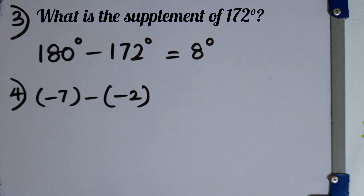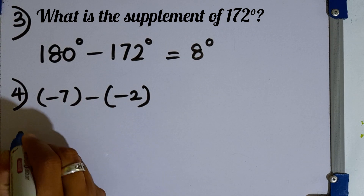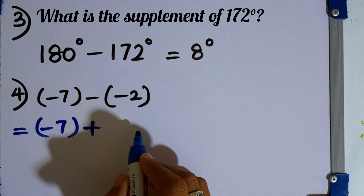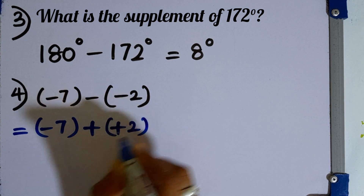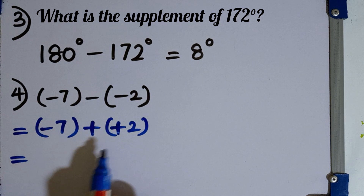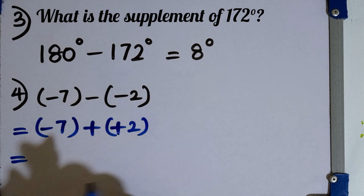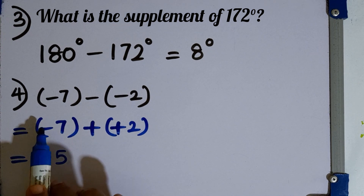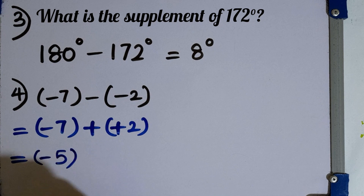Question number 4. Simplify minus 7 minus minus 2. We convert the subtraction into addition by taking the additive inverse of the second directed number. The additive inverse is plus 2, so we get minus 7 plus 2. The difference of the magnitudes is 5, and the sign of the answer takes the sign of the largest magnitude, which is minus. So the answer is minus 5.